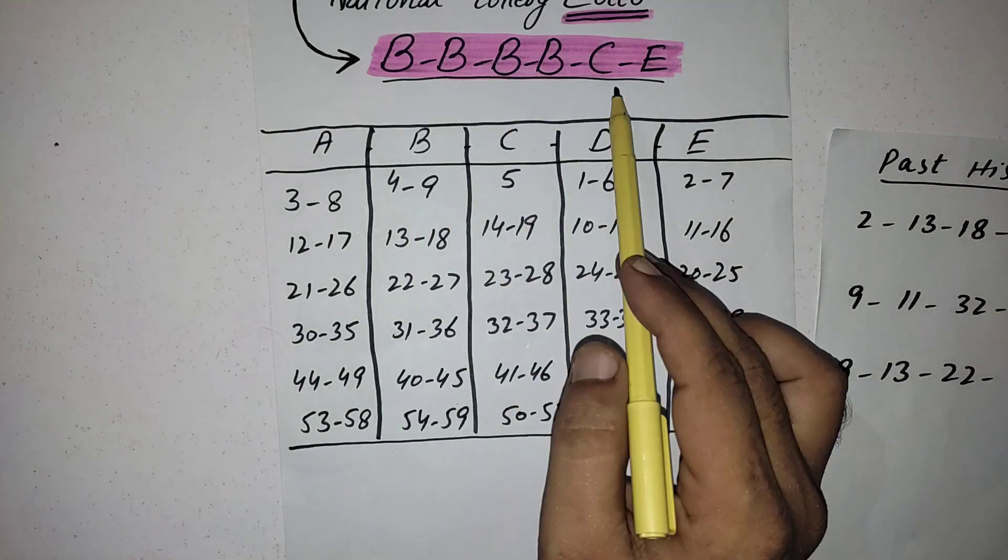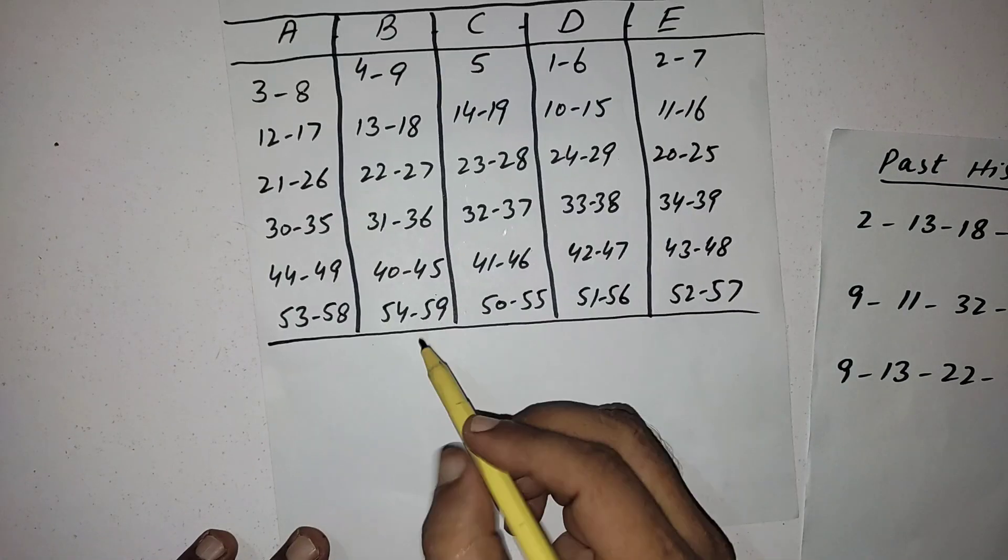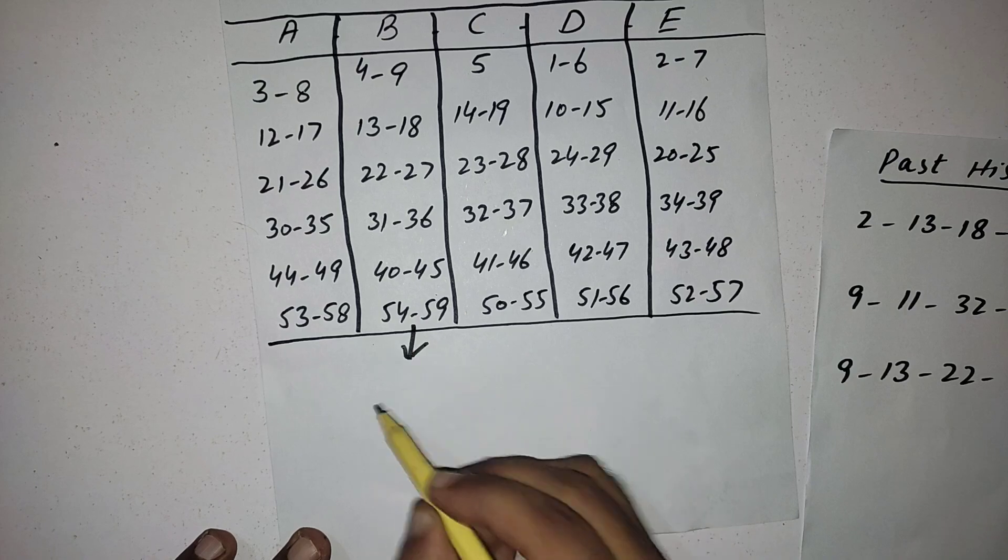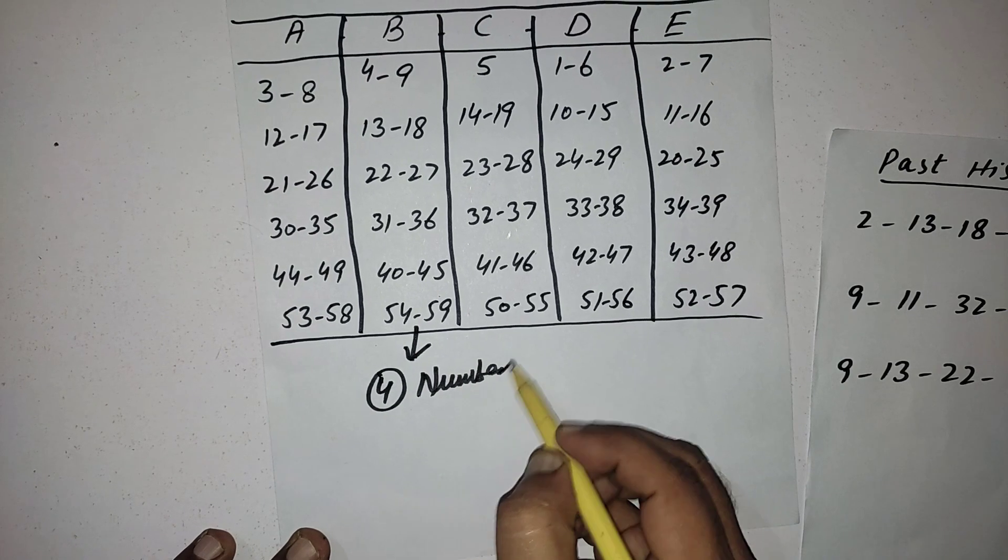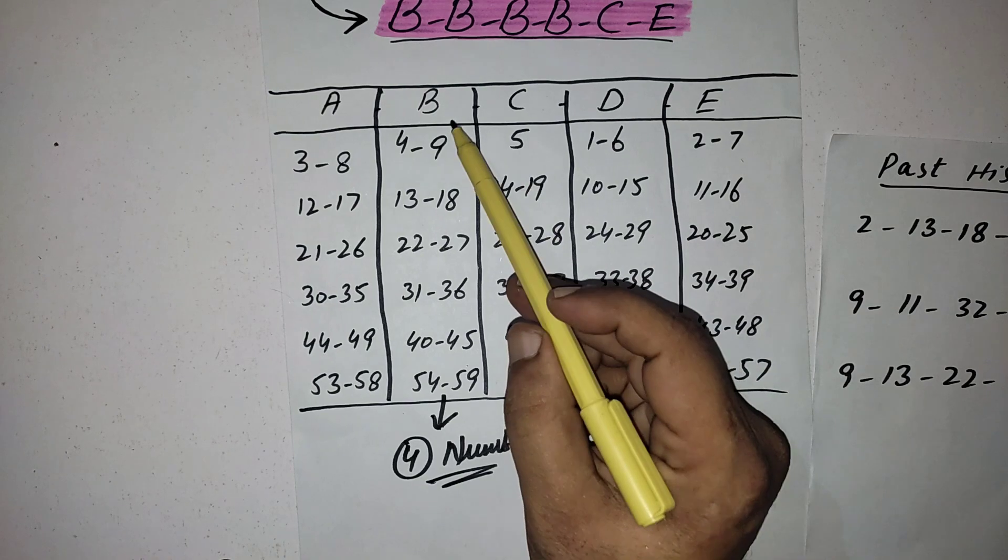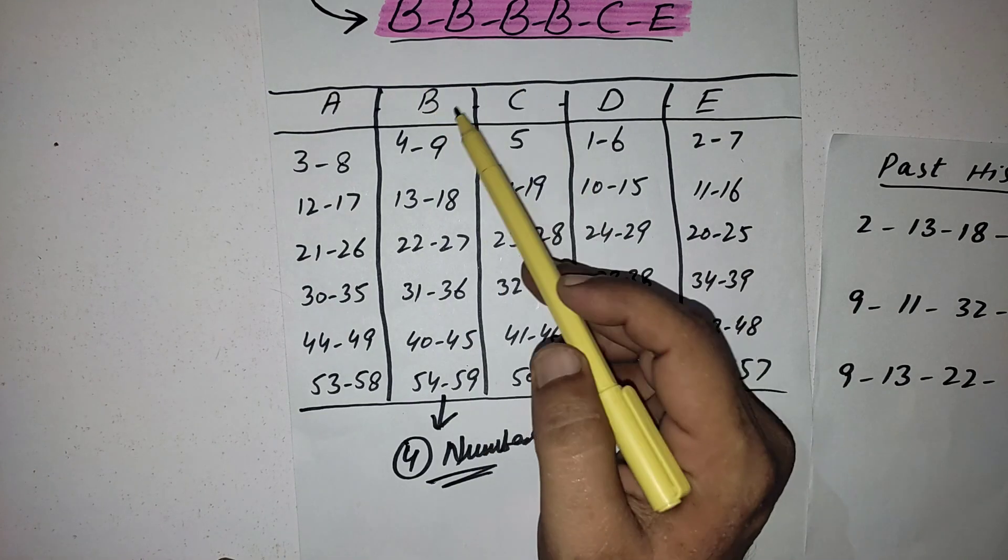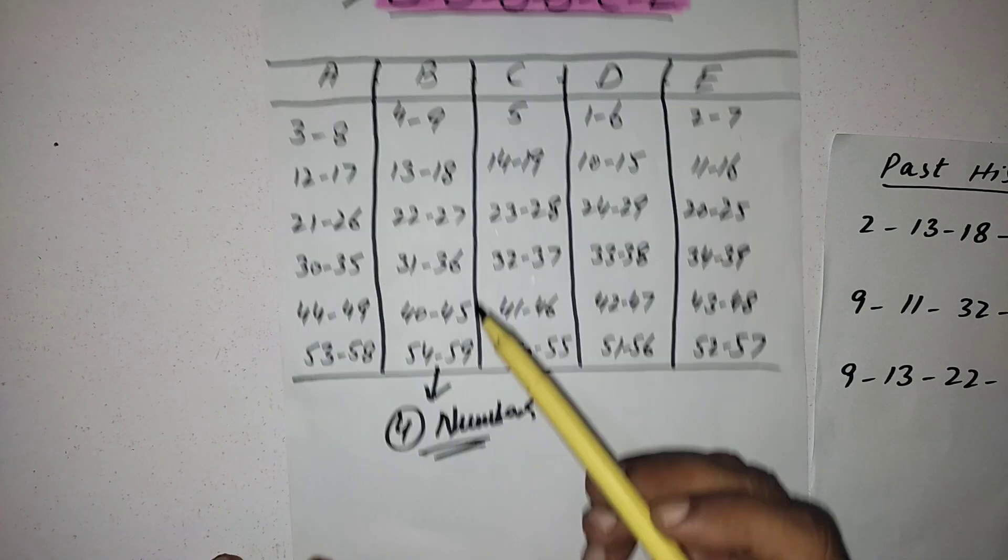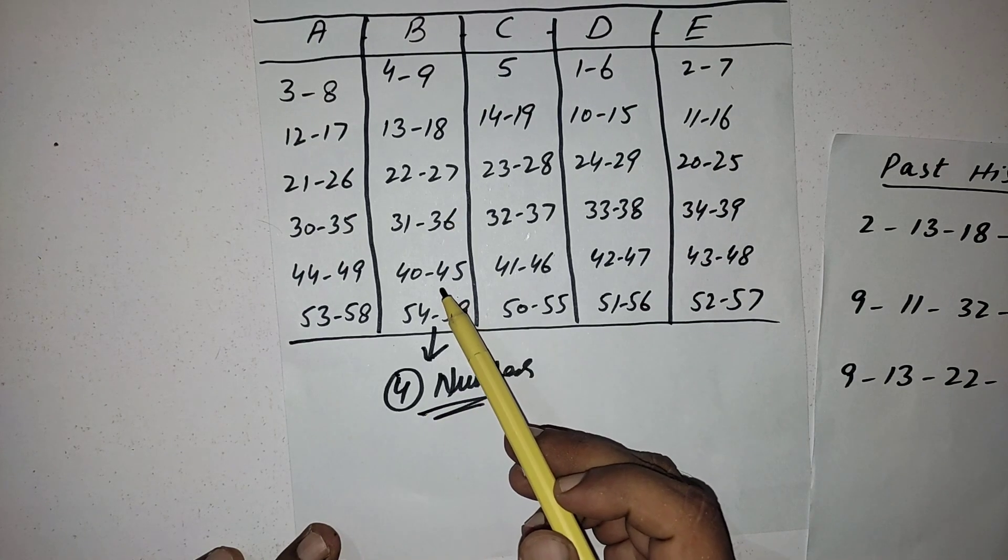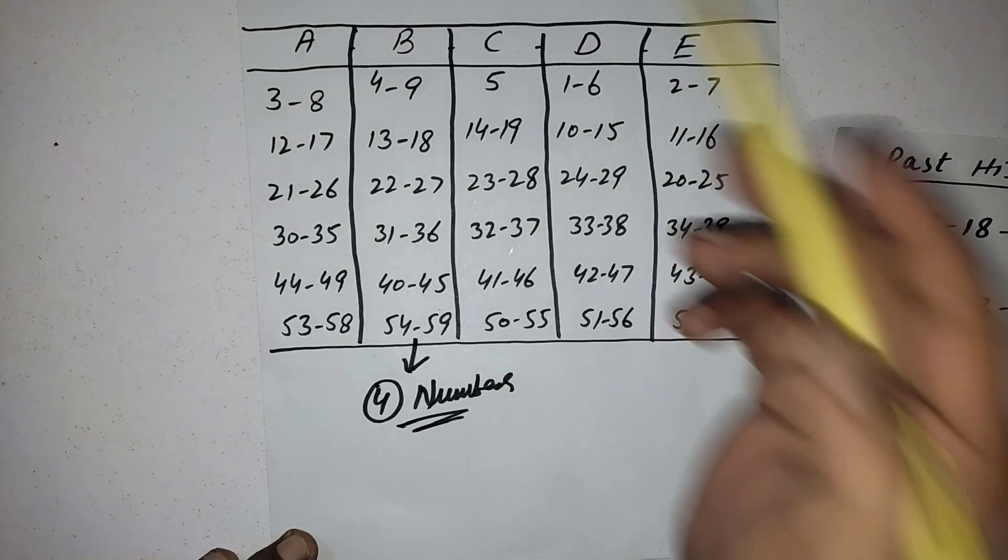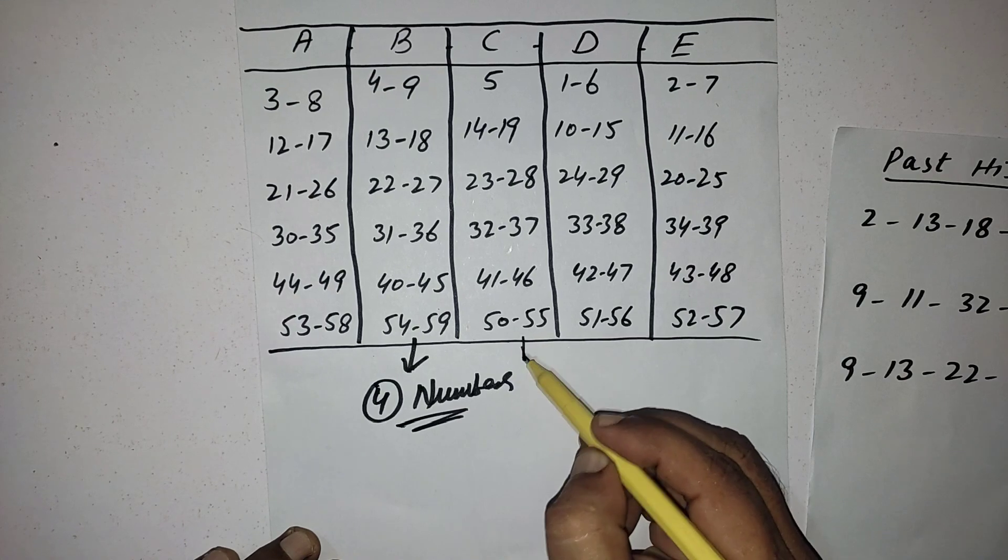Friends, for this strategy, as I write here you can see, you should need to select four numbers from this B category. I write four times B. These are the 12 numbers. You need to select four numbers, any four numbers from here in your future draws, and one number from C category.